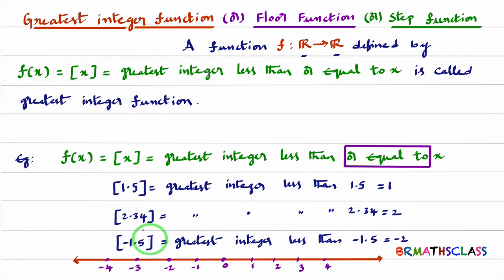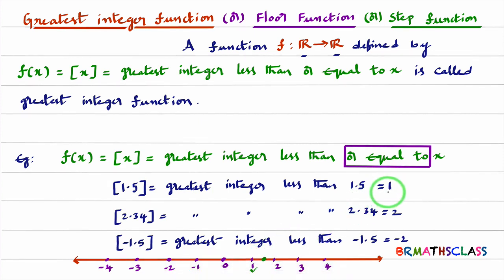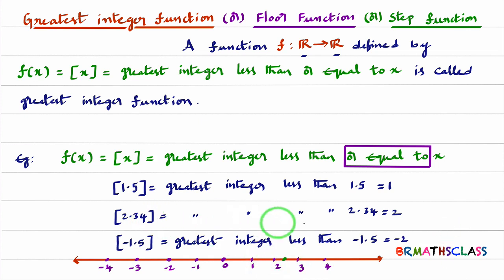Instead of checking like this every time, we have a trick to find values immediately. If you want step 1.5, identify which two integers 1.5 is between — it is between 1 and 2. The left side number is the answer: step 1.5 is 1. Similarly, step 2.34: 2.34 is between integers 2 and 3, left side is 2, so step 2.34 is 2. For step minus 1.5: it is between minus 2 and minus 1, left side is minus 2, so the answer is minus 2.